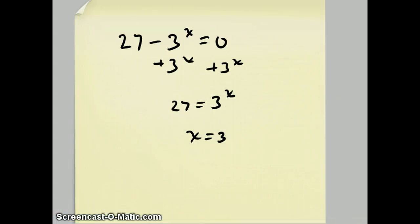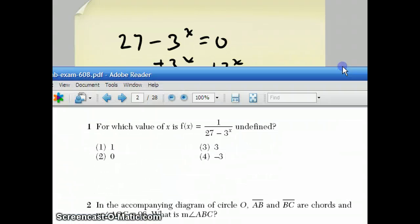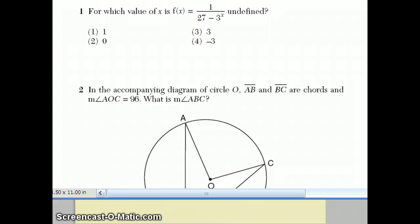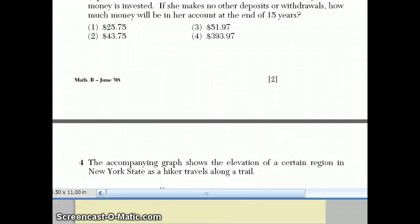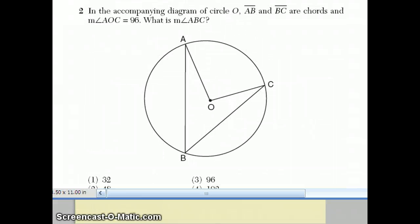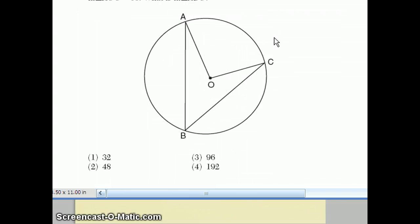Okay. Moving on to question number 2. Question number 2 says, in the accompanying diagram of circle O, AB and BC are chords, and measure of angle AOC is 96 degrees. They want to know what's the measure of angle ABC.